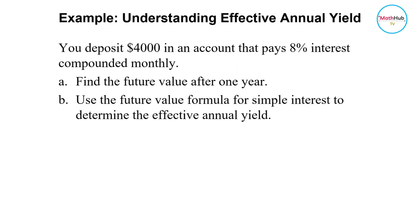So to illustrate this, let's take a look at an example. You deposit $4,000 in an account that pays 8% interest compounded monthly. Find the future value after one year, and then use the future value formula for simple interest to determine the effective annual yield.